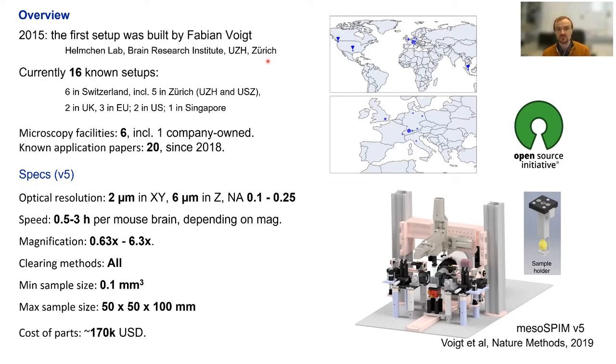The latest published version, mesoSPIM version 5, has these specs: optical resolution of about 2 microns in lateral dimensions XY, 6 microns in Z, and NA depends on magnification from 0.1 to 0.25. It is fast as you could see in the demo. Mouse brain depending on magnification takes from 30 minutes to a few hours. It is compatible with all clearing methods and a big range of sample sizes. The current cost is about 170k in parts, and most of this is the laser.